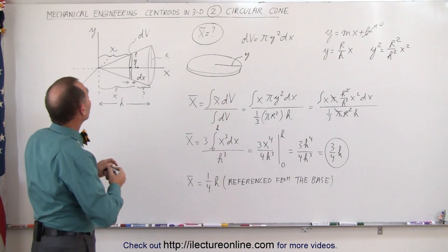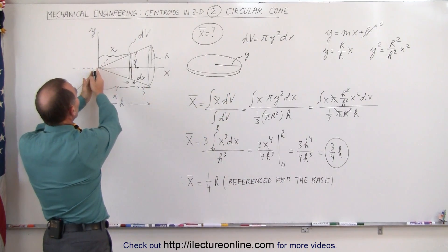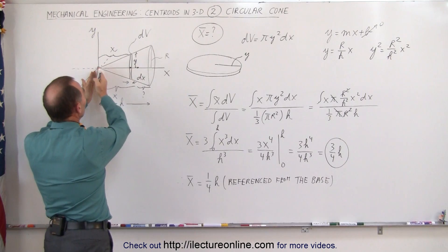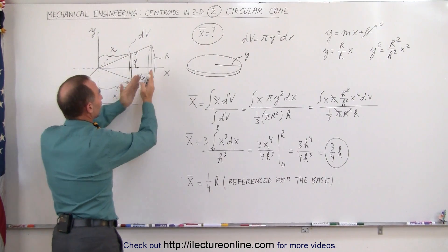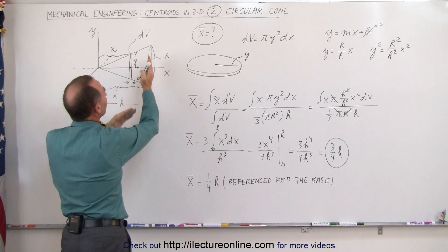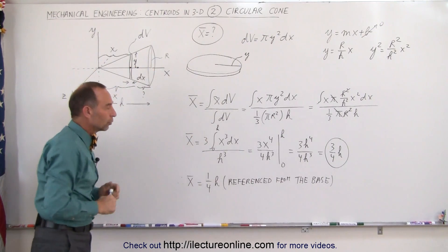To repeat ourselves here, starting from the origin, we can see that the centroid is 3 quarters of distance from the tip of the cone to the base of the cone, but starting from the base, we can see that's 1 quarter distance from the base of the cone to the tip of the cone.